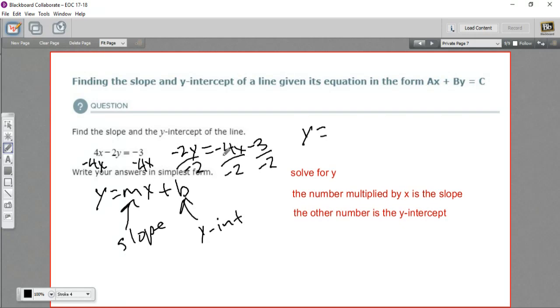Over here, I've got a negative 4 divided by a negative 2. Negative divided by a negative is a positive. 4 divided by 2 is 2. So this is 2x. And then negative 3 divided by negative 2, that's a positive 3 halves.